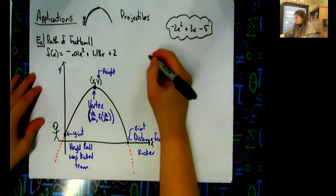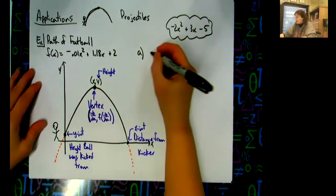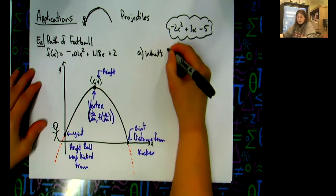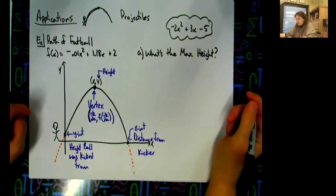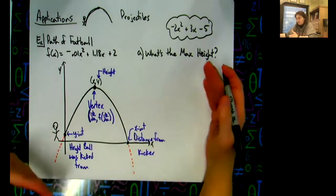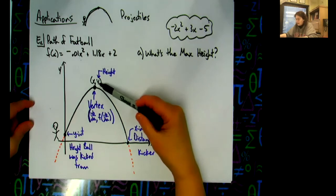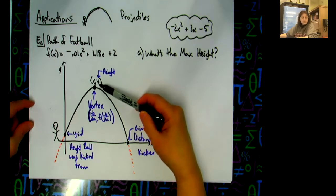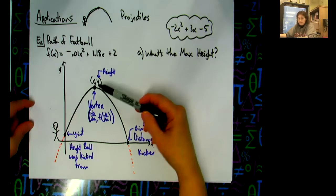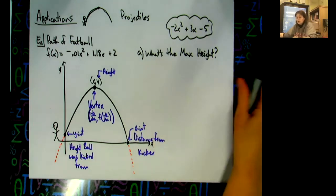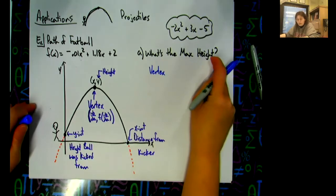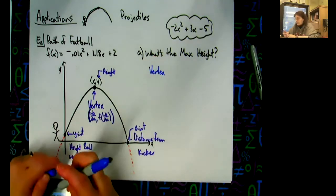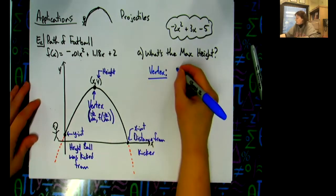For Part A: what's the maximum height the ball reaches? Analyze what they're really asking — they want to know how high the ball went, which means they want the y-coordinate of the vertex. So we need to find the vertex. Figure out what the question is asking for and then put it in context of the math.